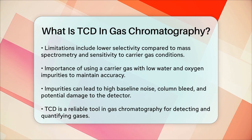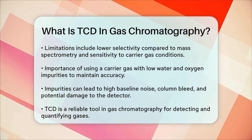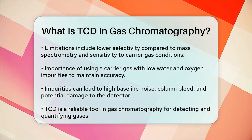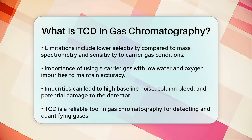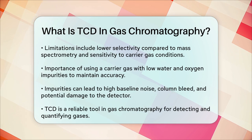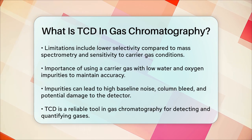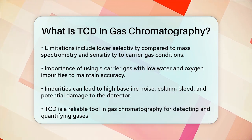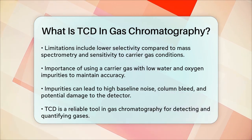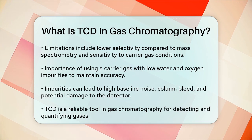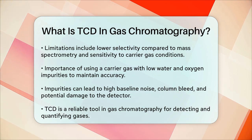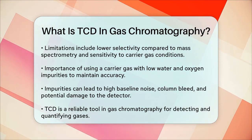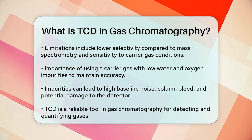To use a TCD effectively, you need a carrier gas with low water and oxygen impurities. These impurities can cause problems like high baseline noise and column bleed, which reduce the analyzer's sensitivity and shorten the column's lifespan. They can also damage the detector wires by oxidation.